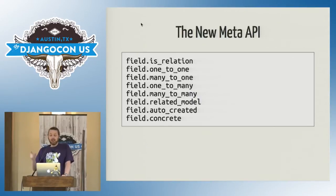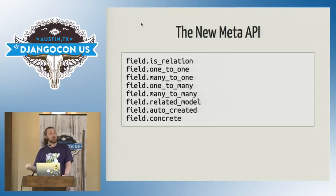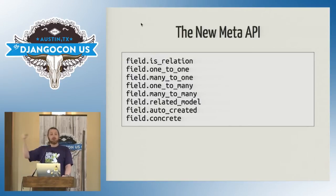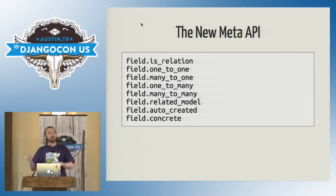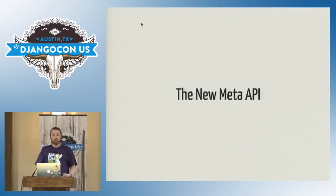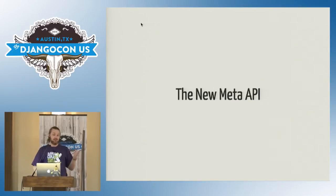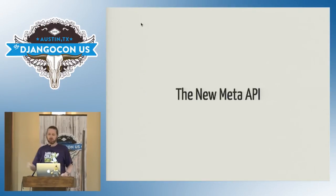From those two calls you get either one or zero-to-many field objects, which have attributes that tell you the properties of that field: is it in a relationship with another model, what is the cardinality of that relationship, what is the other model it's related to, was it automatically generated or explicitly defined in a model file, does it have a direct manifestation as a database column — is it concrete? Internally, this made a whole bunch of code churn, so we could replace get_all_related_many_to_many_objects_with_model with a much simplified call — effectively just a list comprehension over all fields filtering for the field properties we want.